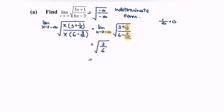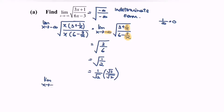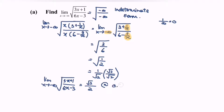Simplifying, we get square root of 1/2. We rationalize the denominator by multiplying by the conjugate. So finally, the limit as x approaches negative infinity of square root of (3x + 1) over (6x - 3) equals square root of 2 over 2, or approximately 0.707, expressed to 3 significant figures.